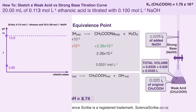When it comes to updating my titration curve, I used 0.0226 litres of sodium hydroxide — that translates to 22.6 mils. So at 22.6 mils, I should have a point showing my pH at equivalence point is 8.74.